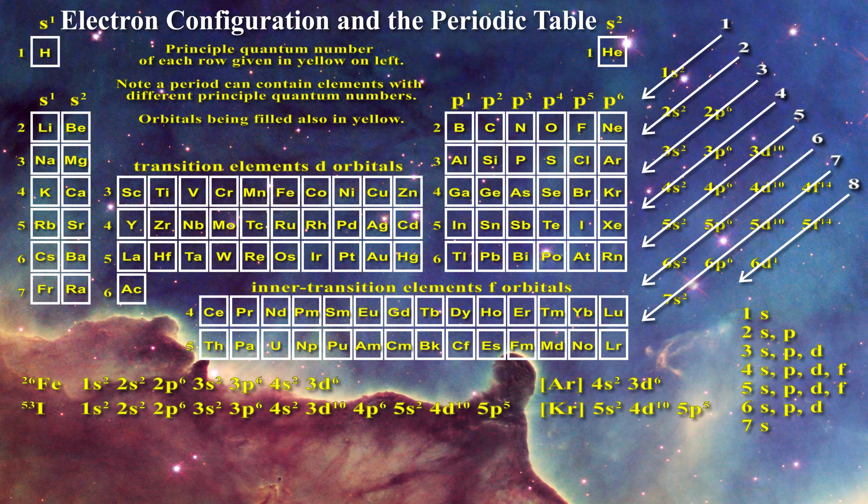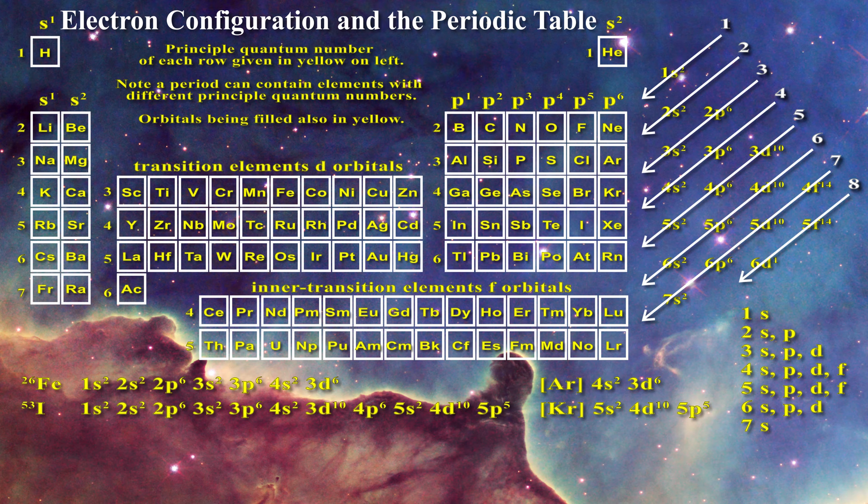If one wants to know the electronic configuration of a cation rather than a neutral atom, an appropriate number of electrons will be removed from the outermost orbitals. For anions the appropriate number of electrons will be added. Generally such an approach will give the ground state of these ions, with some exceptions.